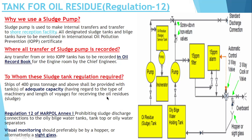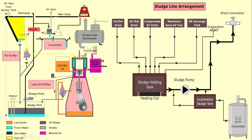What is a sludge pump? Why do we use a sludge pump? Basically, a sludge pump is used in order to make an internal transfer and also the transfer to the shore reception facility. As you can see here, this is a sludge tank. Sludge is generated from the purifier drain, oil mist drain, compressor drain, machinery safe oil tray, scavenge tank drain, and evaporation — all these things are collected in a sludge tank.